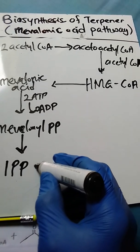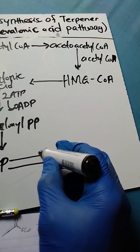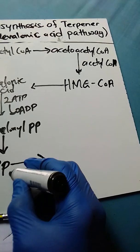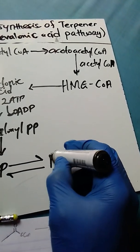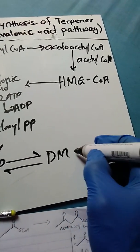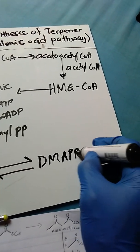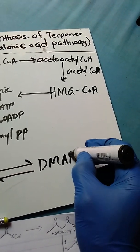The IPP then undergoes isomerization in equilibrium to produce DMAPP, dimethylallyl pyrophosphate.